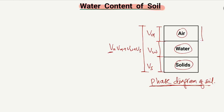Similarly, the weight of the air is represented by WA, the weight of the water is represented by WW, and the weight of the solids is represented by WS. The total weight of the soil sample is W.